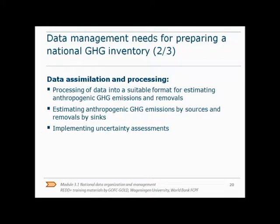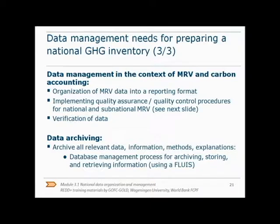Data assimilation and processing includes processing of the data into a format that can be used for estimation of greenhouse gas emissions and removals. The actual emissions and removals can then be estimated. It is important to perform uncertainty assessments related to emissions estimates. When a country wants to report carbon emissions and removals, the first thing to do is to organize the MRV data into a reporting format. Module 3.3 gives more information on how to do this. Implementing quality assurance and quality control procedures and verification of the reported data is very important. Finally, a country needs to archive all relevant data, information, methods, and explanations. A FLUIS can be very helpful for this.